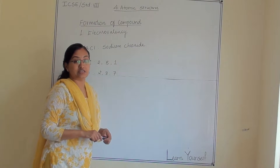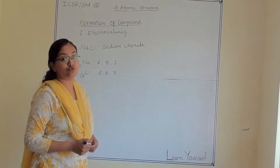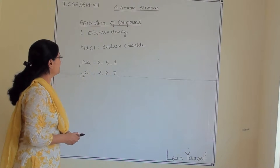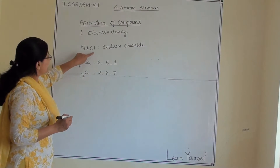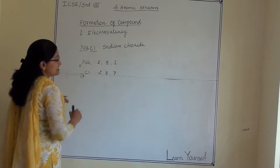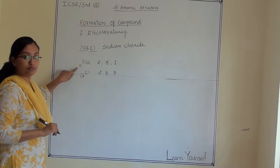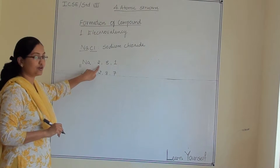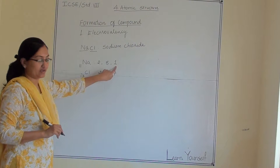Now let us understand electrovalency via the example of sodium chloride, that is NaCl. In NaCl there are two atoms: first is Na and second is Cl. The atomic number of sodium is 11, and its electronic configuration is 2, 8, 1.